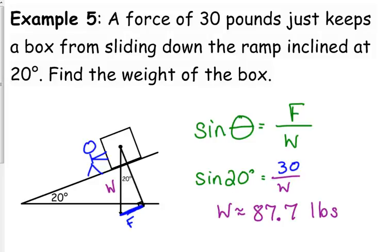So, it really is that easy of an example. You just need to know when this is the scenario, when you talk about a box on a ramp, it's sine of A equals F over W, solve for the force or the weight, whichever one they're asking you for. And that's it.